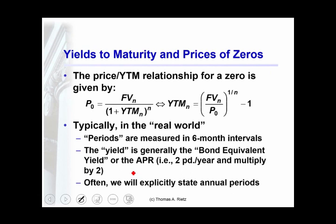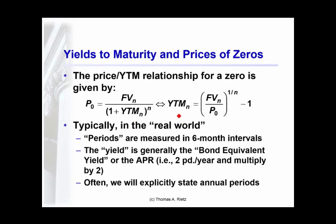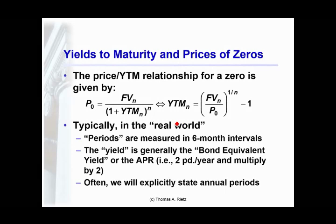The two equivalent formulations are: price equals future value divided by (1 plus the interest rate) to the n, or solving for the yield. Often zero-coupon yields are quoted as if they have six-month compounding; often they are quoted as if they have annual compounding. Which one we're using we'll just need to be clear about, so you'll know what the convention is in a particular example.